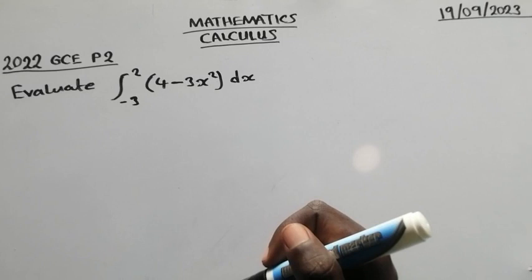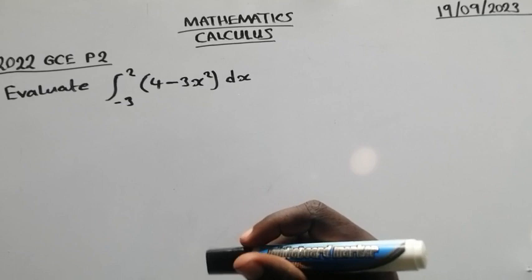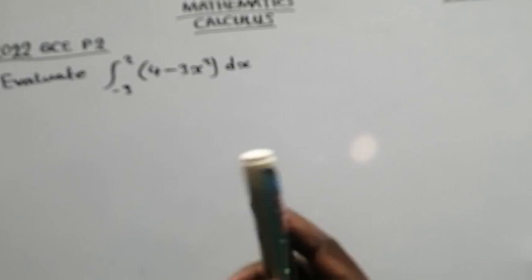Evaluate integral of (4 - 3x²) dx where the upper limit and lower limit is given. We have the upper limit 2 and the lower limit negative 3.